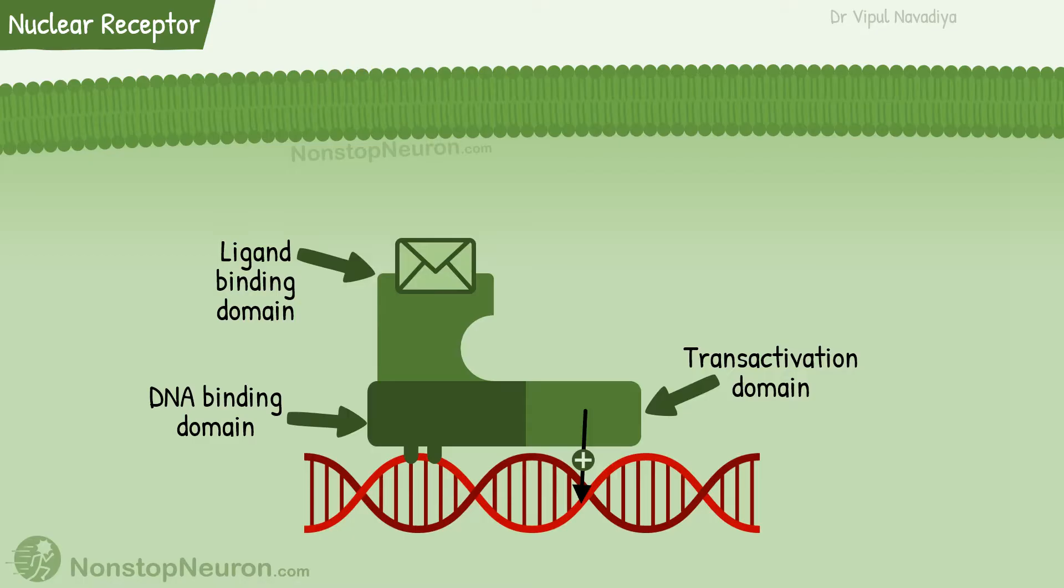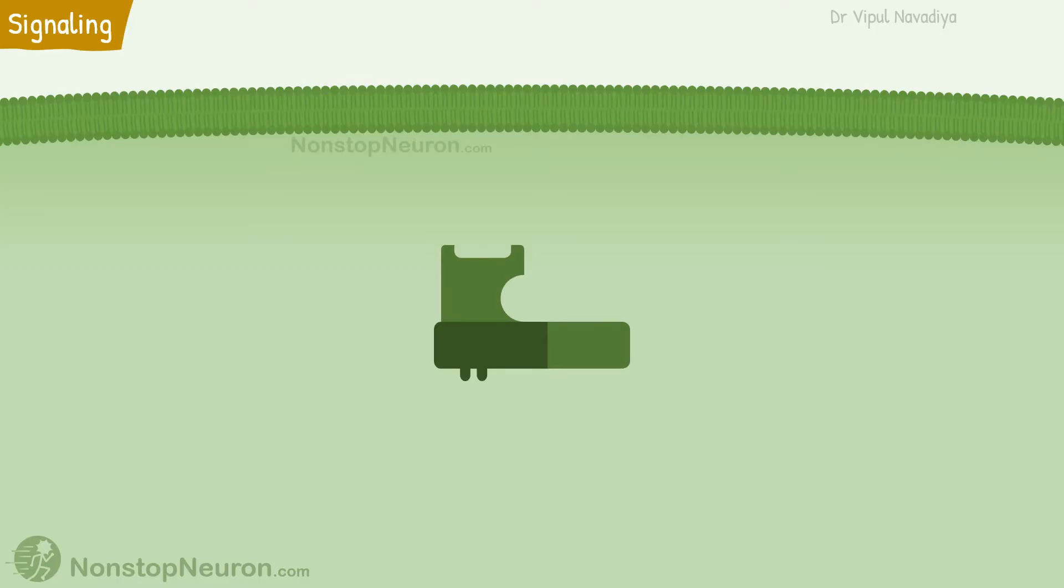So this was the basic about nuclear receptors. Now let's see the signaling pathway for glucocorticoid receptors. As we have already seen, they are found in the cytoplasm.